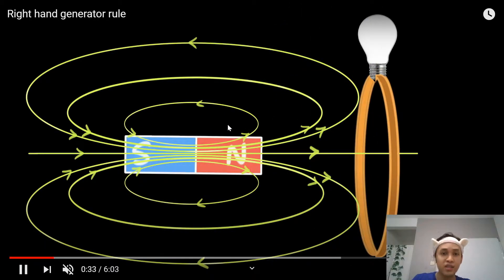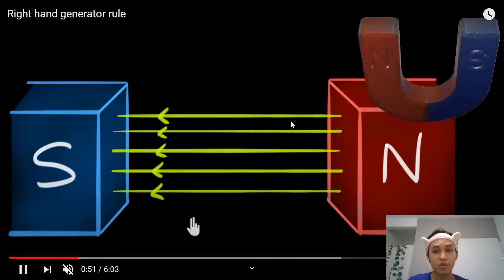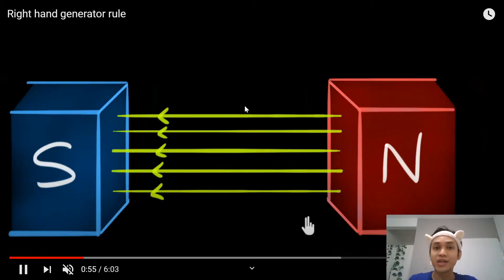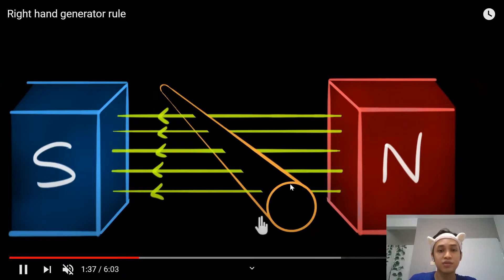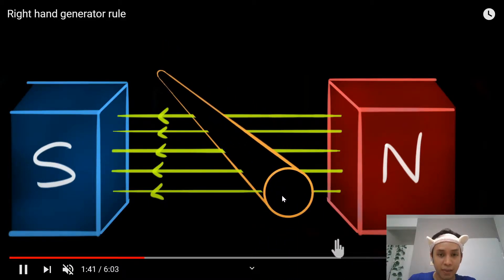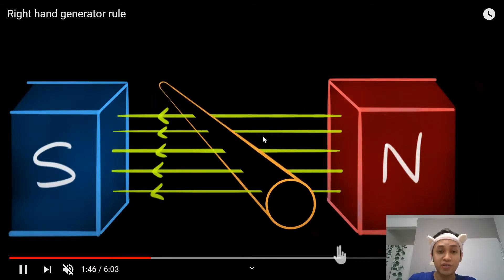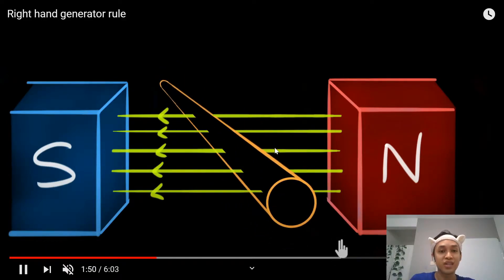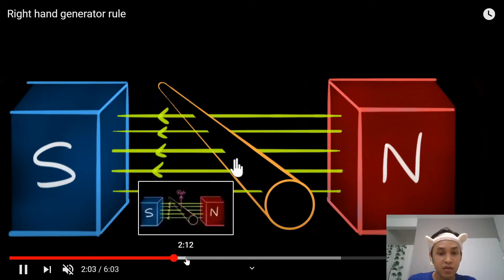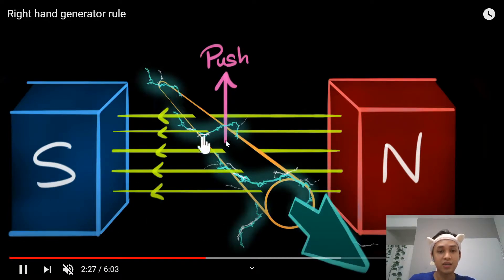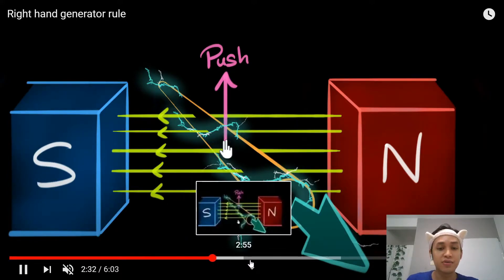As long as you cut the magnetic field — it doesn't matter how you cut it — you will produce electrical current. Here we have a magnet; if I take a conductor and move it up and down through the field, I generate electricity. To produce an induced current, you need a conductor cutting up and down. We use the right hand rule in this case.